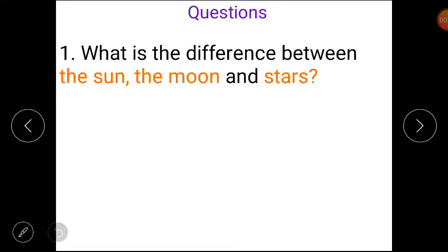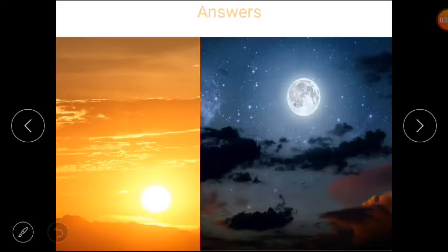Now students, here is a question for you. Tell me what is the difference between the sun, the moon, and stars? Sun, moon aur stars mein kya difference hai? Students, the shape of the sun is round. Sun ki shape kaise hoti hai? Round.